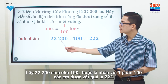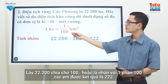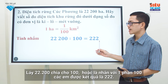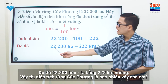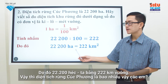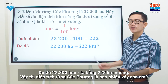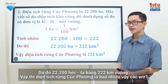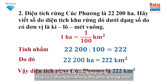We can quickly solve the problem like this: divide 22,200 by 100, or multiply 22,200 by one-hundredth, and the result is 222. So 22,200 hectares equals 222 square kilometers. That is the area of Kukfung Forest — what an interesting fact, isn't it?